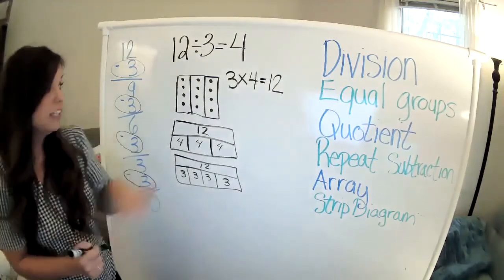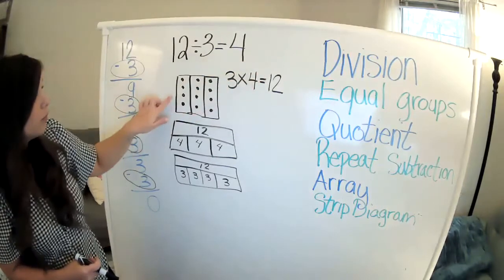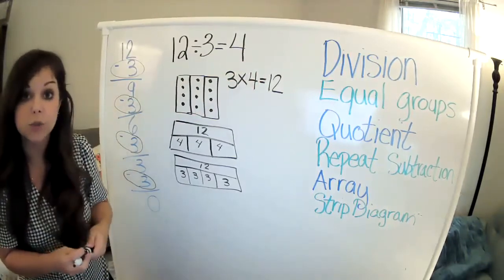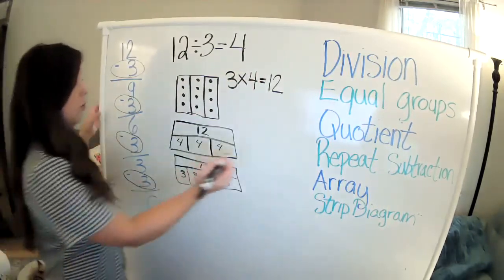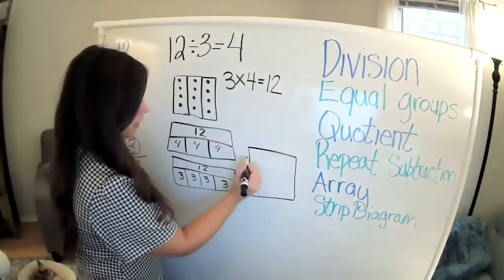So these are some of my favorite ways to show division. For an array, you can also use a grid if you want. So if you're doing a grid, you're going like this.